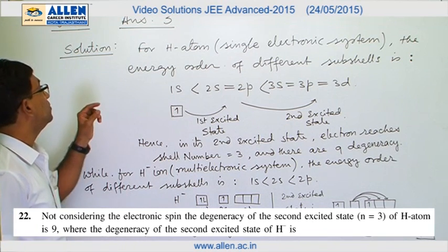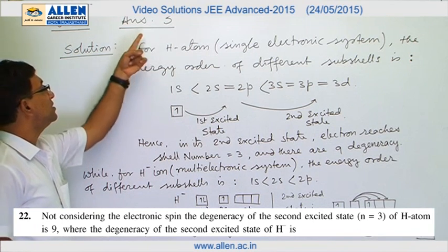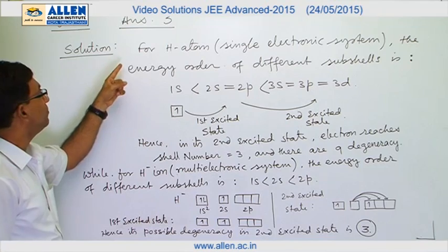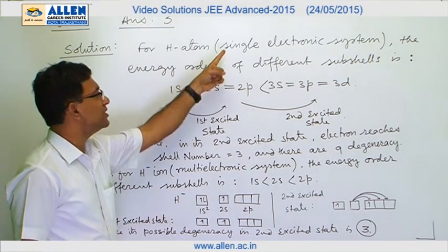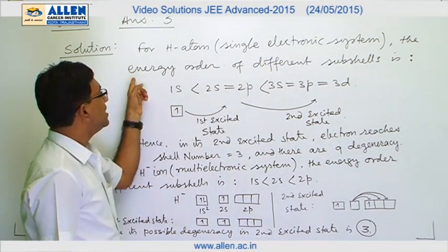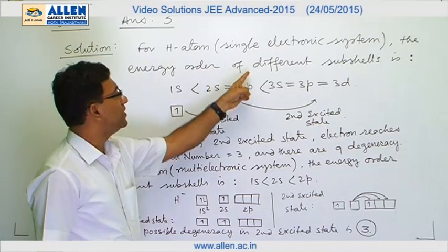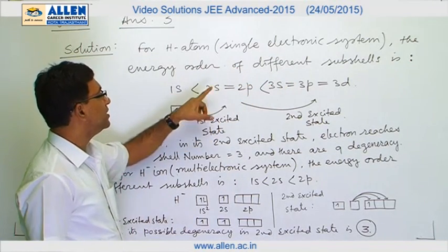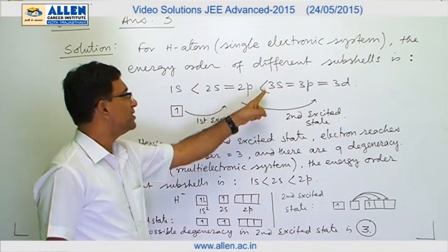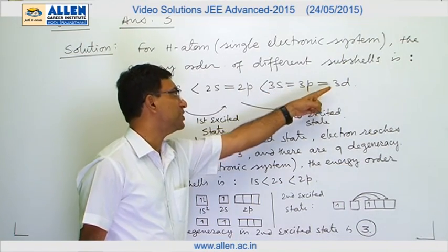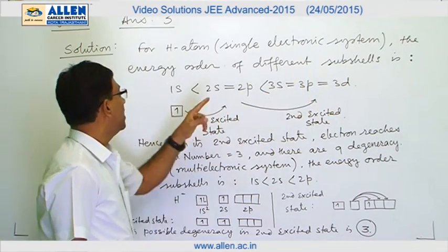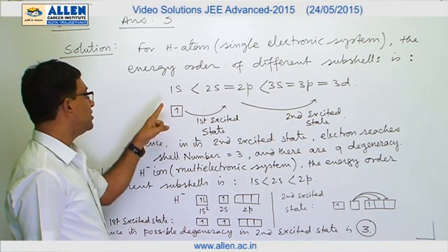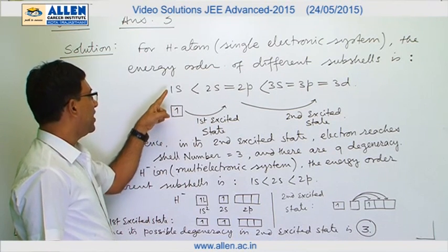Question number 22, answer is 3. For a hydrogen atom, which is a single electron system, the energy order of different subshells is: 1s < 2s = 2p < 3s = 3p = 3d. In the ground state of hydrogen, the configuration is 1s¹.